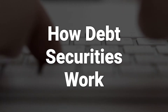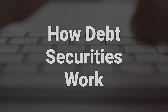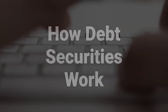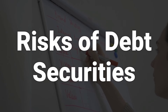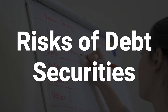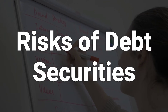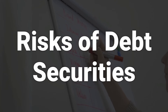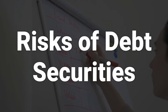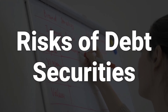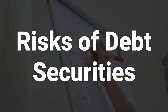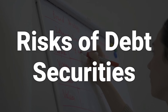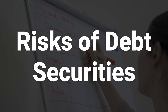Debt securities are also known as fixed income securities because they generate a fixed stream of income from interest payments. Debt securities are generally considered to be a less risky form of investment compared to stocks, since the borrower is legally required to make payments. However, the true risk of a particular security will depend on its specific characteristics. Companies with higher credit ratings will usually offer lower interest rates on their debt securities and vice versa.